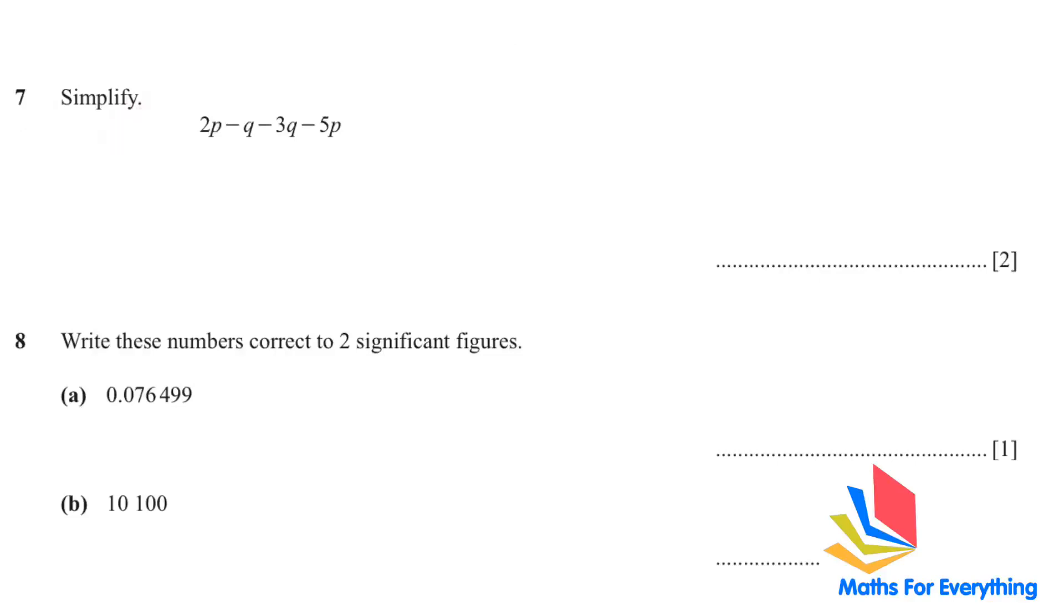Question number 7 is simplify. We have been given 4 terms. We add the like terms together. So there is a P here and a P here. 2P minus 5P. The numbers before P you can put in the calculator. 2 minus 5 will give you negative 3P. And then when you put these numbers in the calculator, negative 1 and negative 3, you will get negative 4Q. I hope you are aware that if you have a variable, if it's just like this, it means there is a 1 before it. So therefore, if you have a negative Q, it means there is a negative 1 there.